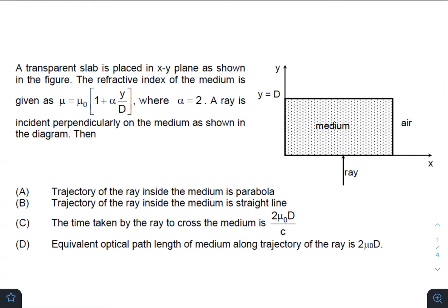Hey, what is up everyone! I hope all of you are doing great. In today's question, we have a transparent slab placed in the x-y plane as shown in the figure. The refractive index of the medium is given as a function of y, so it is varying in the y direction, where alpha is given as 2.